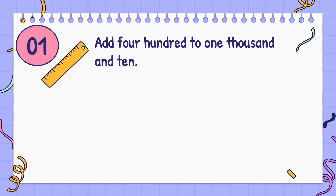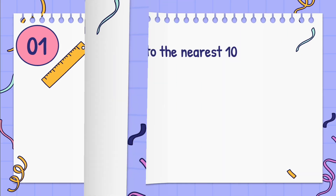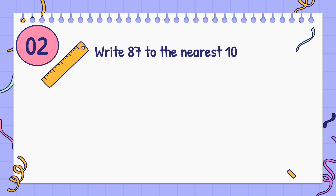Add 400 to 1010. Write 87 to the nearest 10. Answer: 90.